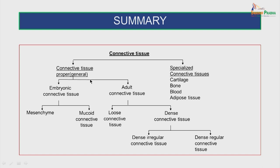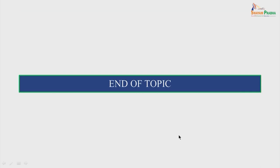To summarize, the general connective tissue and the specialized connective tissue: the general connective tissue includes the embryonic connective tissue and the adult connective tissue. Embryonic connective tissue has two subtypes — mesenchyme and mucoid connective tissue. In adult connective tissue we have the loose connective tissue — areolar tissue — and the dense connective tissue which includes dense irregular and dense regular. These are the different types of connective tissue. Thank you.